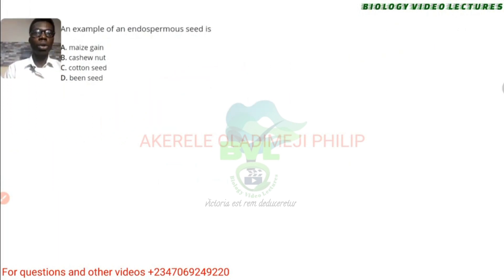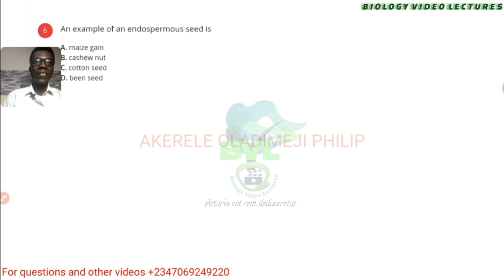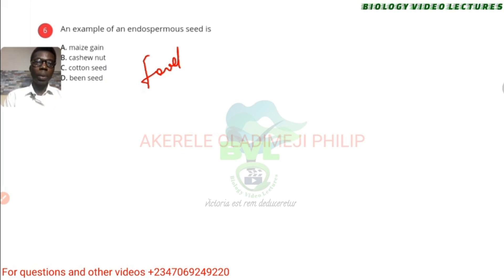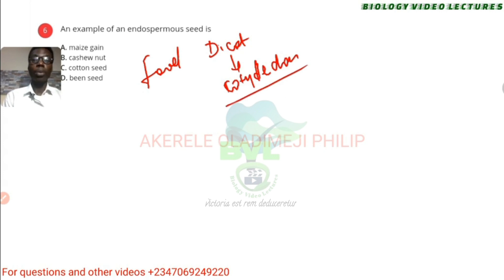An example of an endospermic seed — normally a seed has either a cotyledon or endosperm. The endosperm or cotyledon provides food for the seed to germinate. For a seed to germinate it needs to respire, and energy is produced for germination. That food is stored in either cotyledon or endosperm. Cotyledon is found in dicots, while endosperm is produced by monocots — for example, maize. That's the reason why that's the answer.